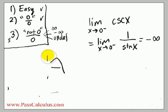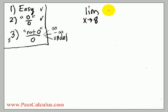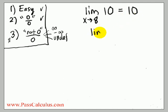By now you have the basic idea of how pretty much any limit of a function is going to work. There are maybe just a couple of special examples you may have never seen. For instance, the limit as x goes to 8 of 10 — there's no x in here. This is called the limit of a constant. If you put 8 in wherever you see x, the answer is just 10. So the limit as x goes to a of a constant is just that constant. This is type 1 — an easy kind.